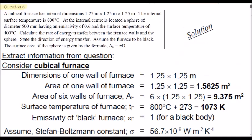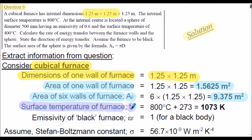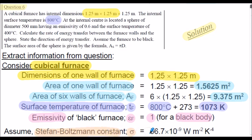Here's the commencement of the solution for question 6, extracting the information. Considering the cubicle furnace: each wall is 1.25 metres by 1.25 metres, so we calculate the area of one wall of the furnace. As it's a cubicle furnace, we calculate the area of all six walls, labelled AF. The surface temperature of the furnace TF is 800 degrees C, converted to Kelvin. We're informed the furnace is a black body, so the emissivity epsilon F for the furnace is 1, and we have the Stefan-Boltzmann constant as before.